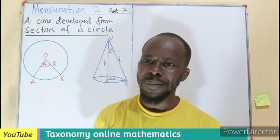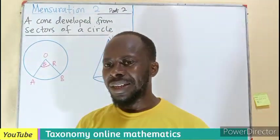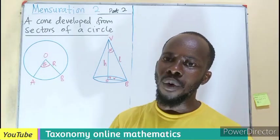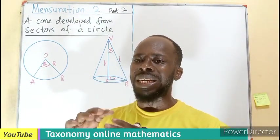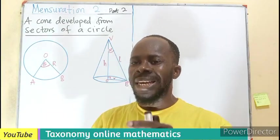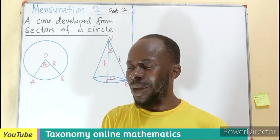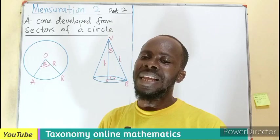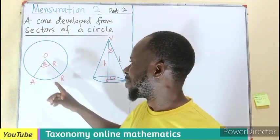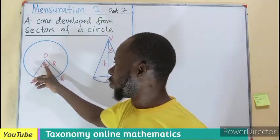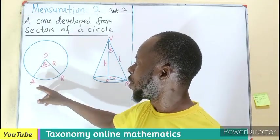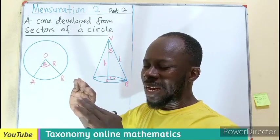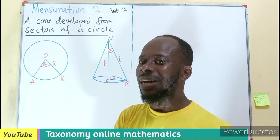Welcome to another episode on mensuration, taking into consideration the cone. We want to see how we can develop a cone from the sector of a circle. We know a sector is just a region that is bounded by two radii and an arc. When enclosed, that gives us the sector.